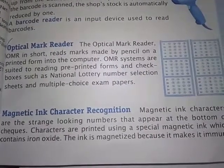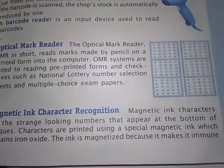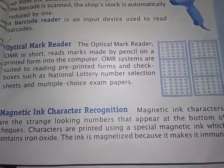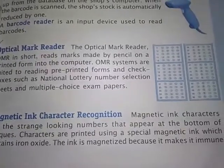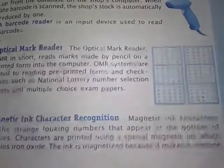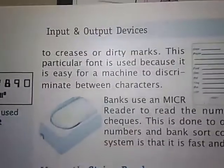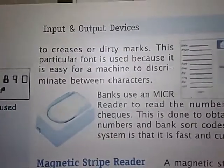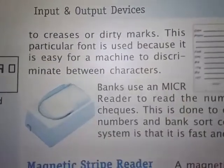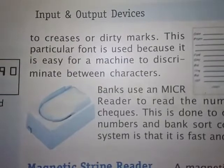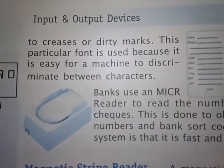Characters are printed using a special magnetic ink which contains iron oxide. The ink is magnetized because it makes it immune to creases or dirty marks. This particular font is used because it is easy for a machine to discriminate between characters.